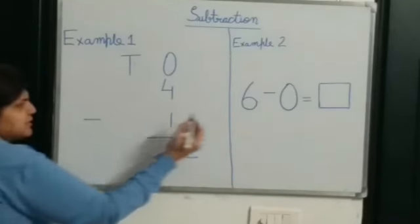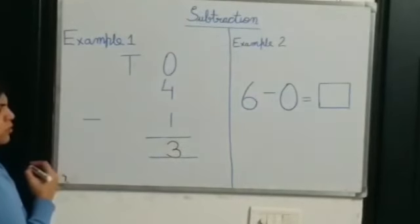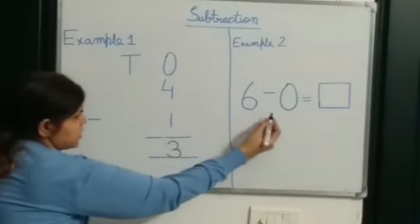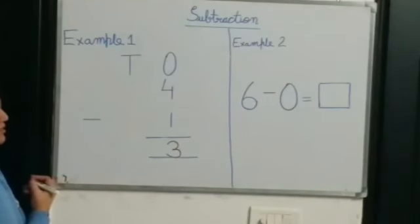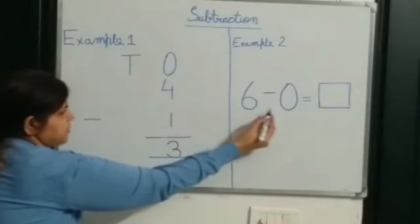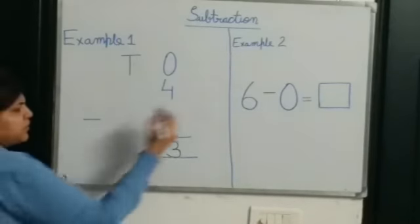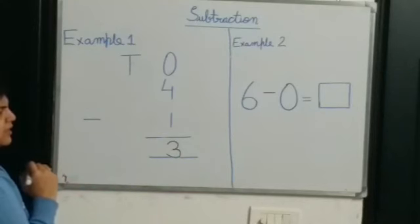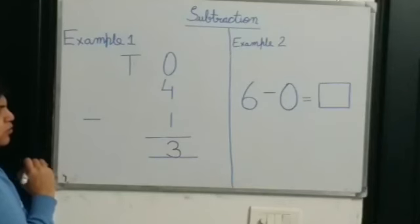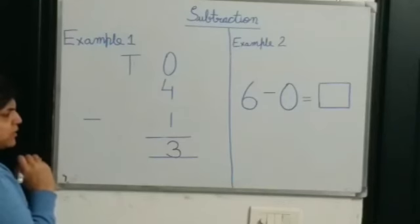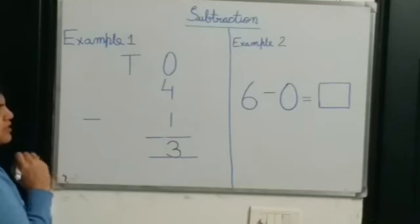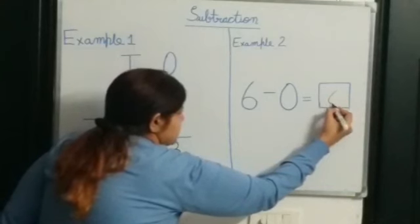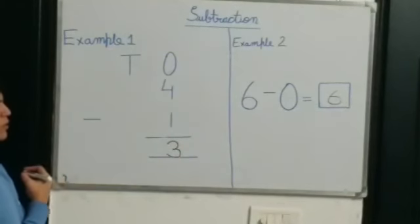Our second example is 6 minus 0. So kids, first of all tell me which number is greater — number 6 or number 0? Yes, number 6 is greater than number 0. So we will keep number 6 in our mind and 0 means nothing, so we will not take out any finger. As 6 is in our mind and we don't have to do backward counting, our answer is 6. 6 minus 0 is equal to 6.